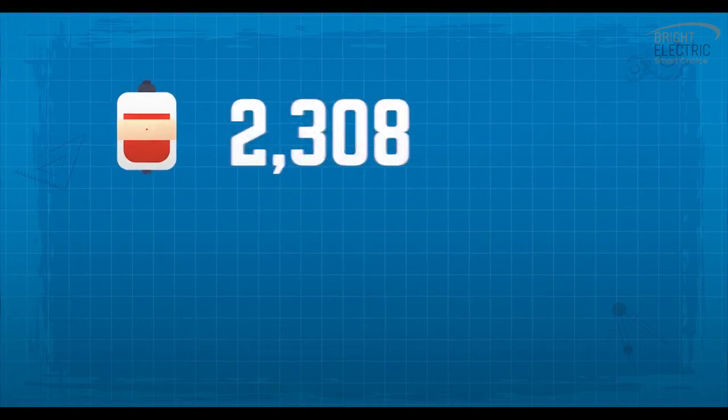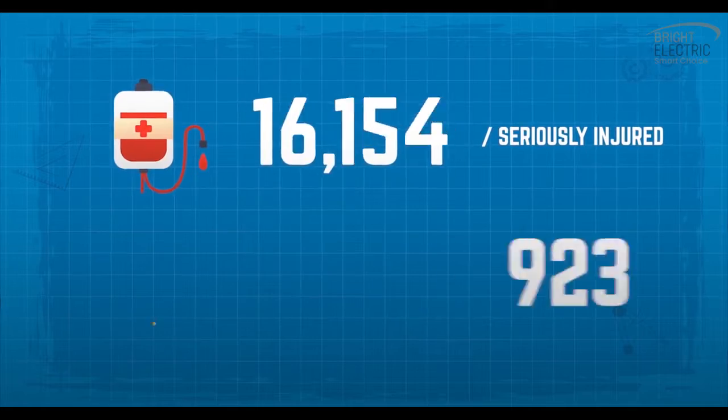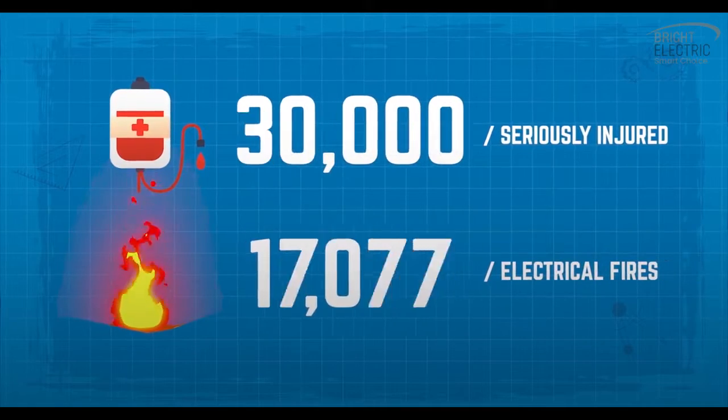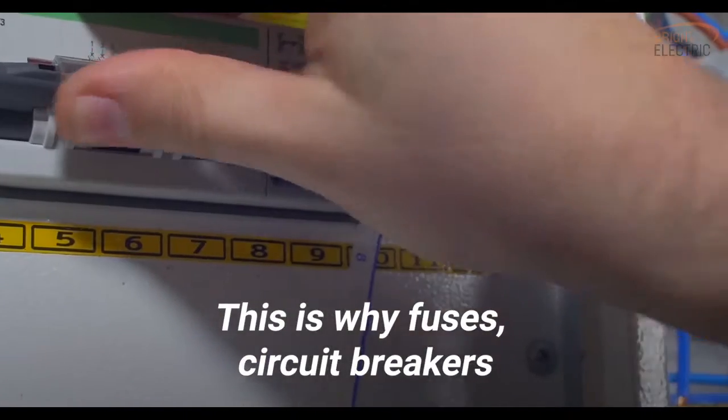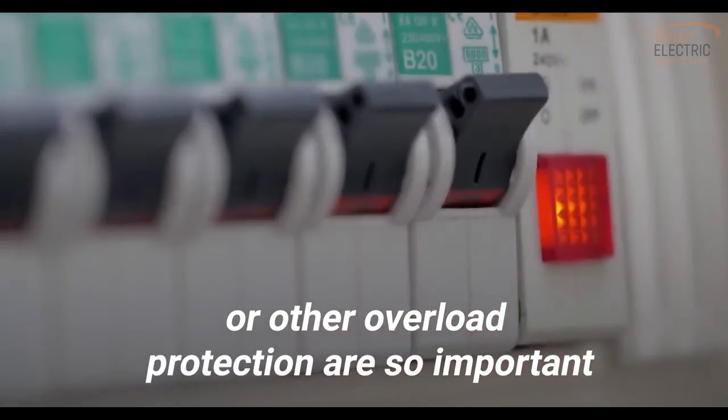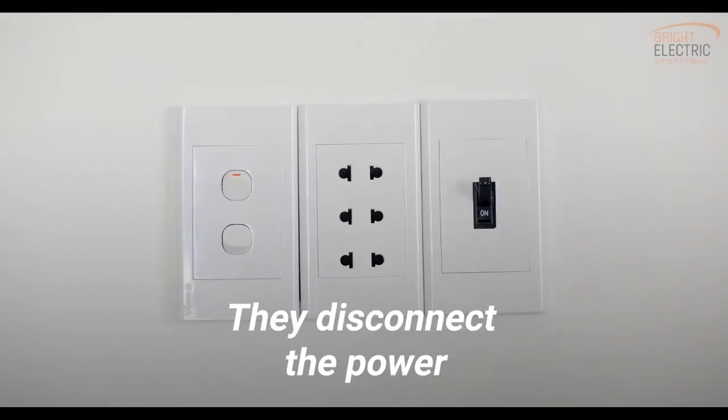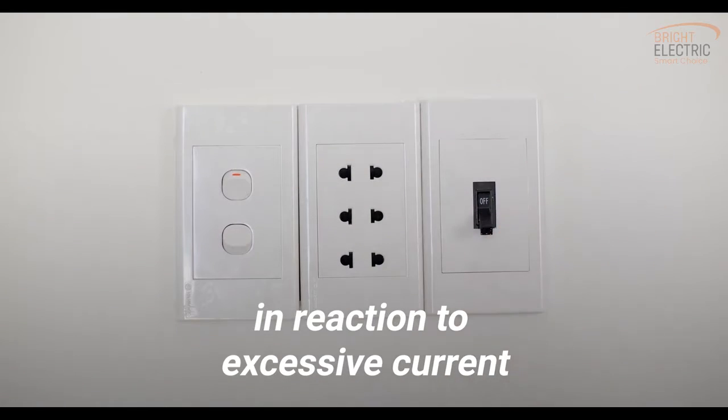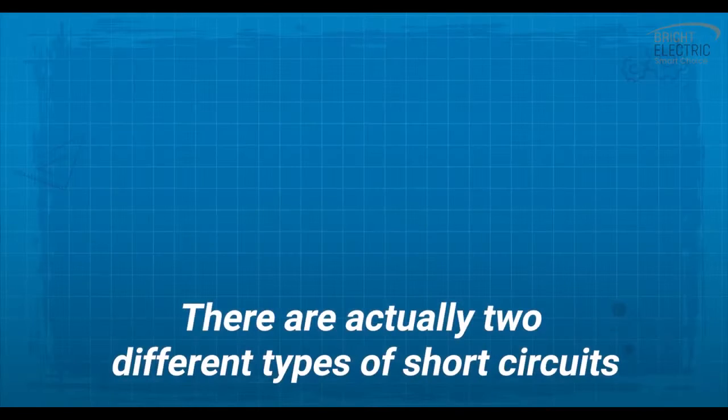30,000 are seriously injured and there are over 24,000 electrical fires. This is why fuses, circuit breakers, or other overload protection are so important - they disconnect the power in reaction to excessive current. There are actually two different types of short circuits.